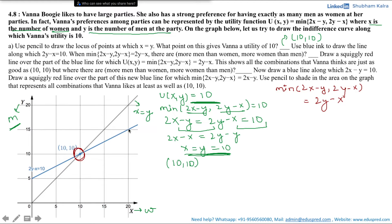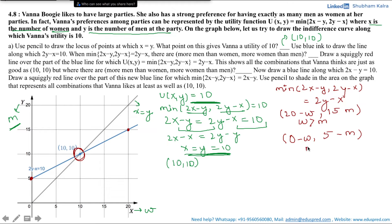Consider the point (20, 15) — here we have 20 women and 15 men, meaning more women than men. Consider another point: (0, 5), where we have 0 women and 5 men, meaning more men than women. So points to the left of (10, 10) on this line give more men than women, and points to the right give more women than men.